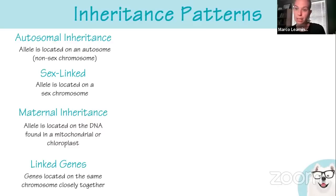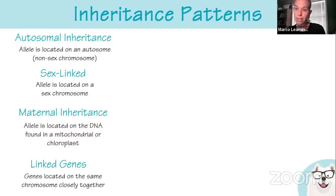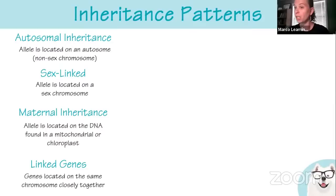If traits are on the same chromosome, they'll be linked — we won't see normal ratios like 9:3:3:1. When they show linked traits on the exam, they're usually looking at a heterozygote in a test cross with a homozygous recessive. In a dihybrid crossed with a double recessive, you'd expect a 1:1:1:1 ratio. If you don't see that ratio, the traits are linked and less than 50 map units apart.